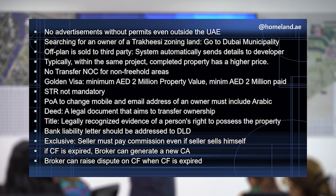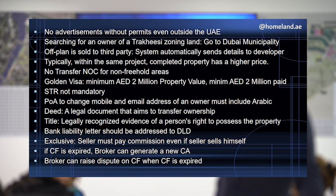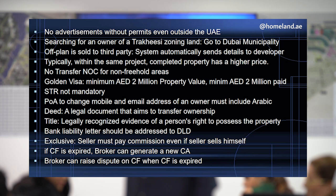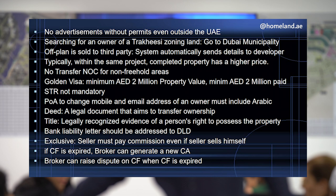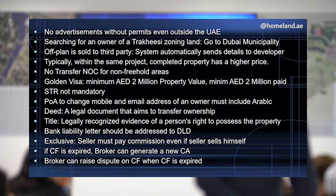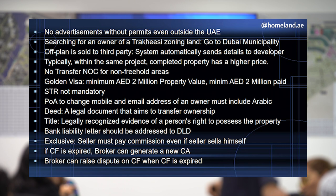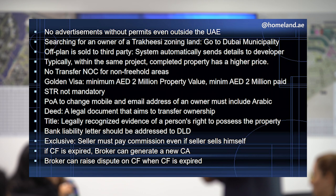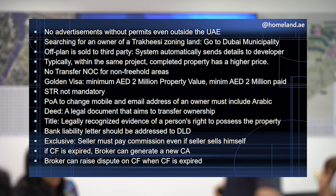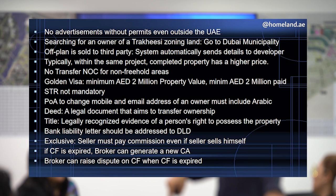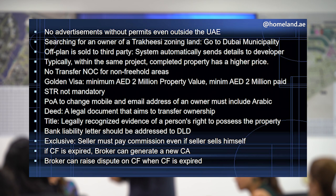Even if Muhammad has an exclusive contract with an agent, he can still sell the property directly by going to the registration trustee office without a CA — because CA is only required when an agent is involved. However, the agent can then file a claim for commission since an exclusive contract was in place.